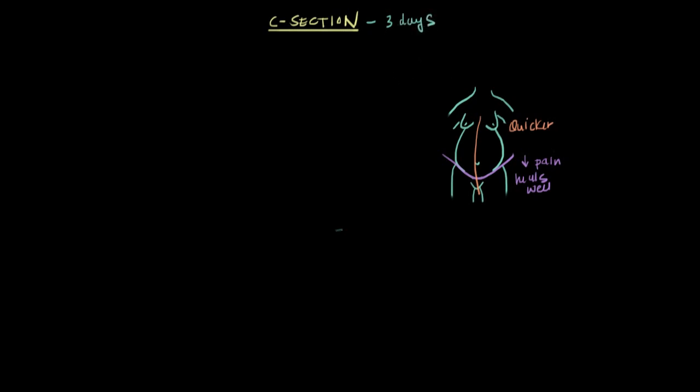So, how common is this, and why would a woman need to have a C-section rather than a vaginal delivery? Well, one in every three babies born in the US is born through a C-section, and that's not even the highest rate in the world. The highest rate is actually seen in China at 46% of all births.